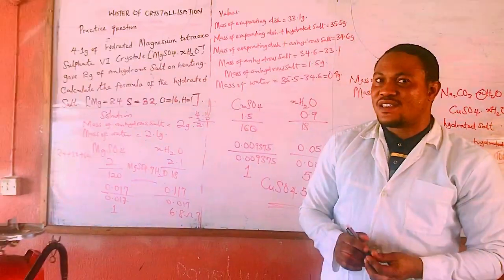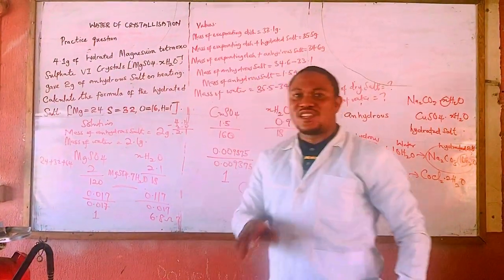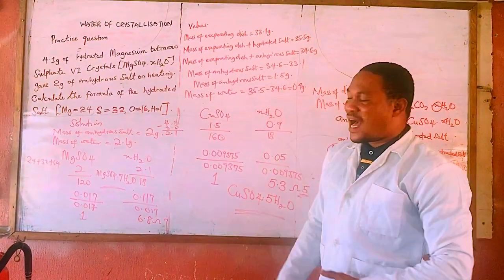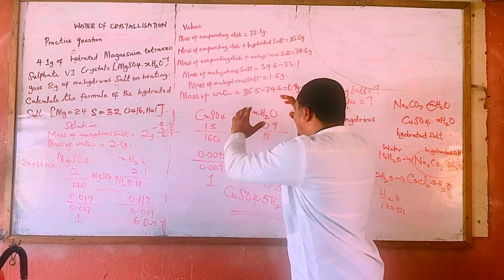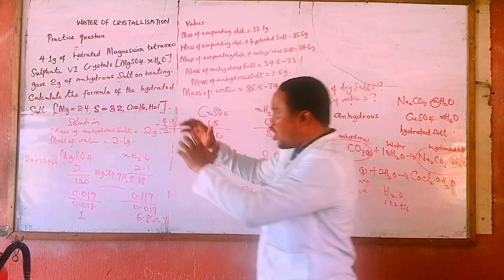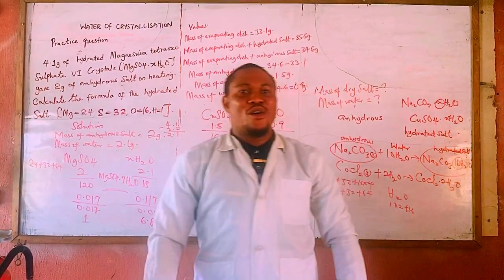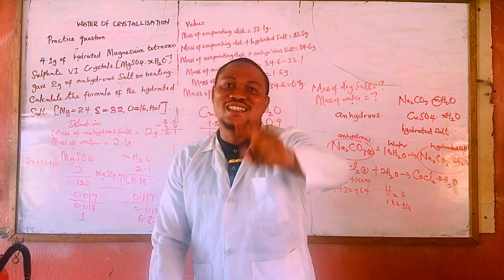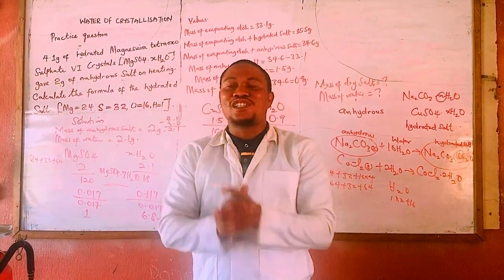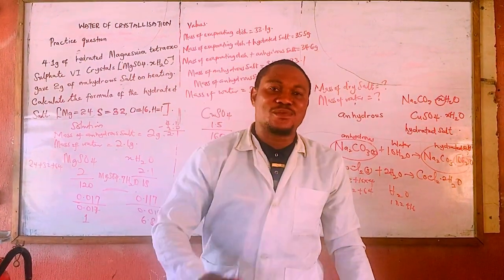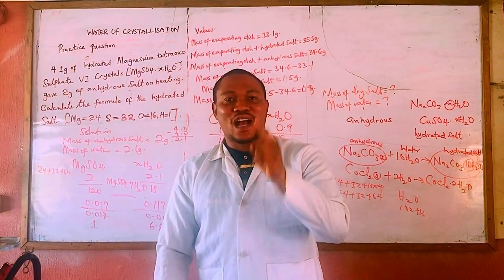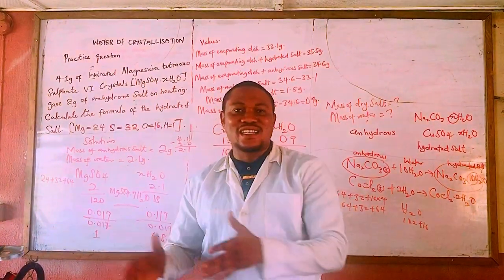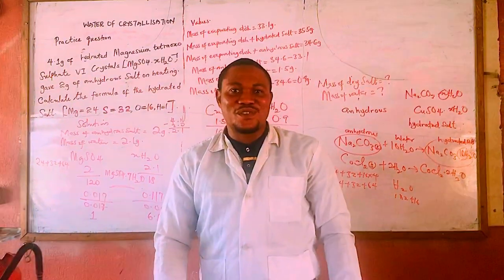To determine water of crystallization in a particular salt, you need the mass of the water and the mass of the salt. We have demonstrated this practically and solved a theoretical question to back it up. If you are watching this channel for the first time, please subscribe and click the notification bell so that when we upload exciting chemistry videos like this, you will be notified. Thank you.